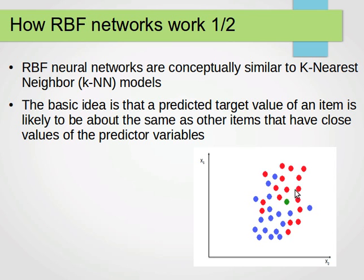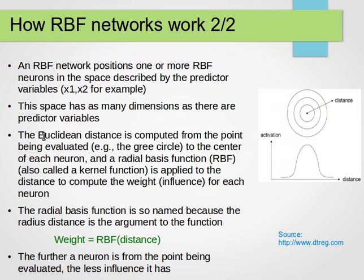For example, with two-dimensional data and two classes — red and blue — and a new green point we want to classify, we can choose the five nearest neighbors around it and use majority vote to classify that new point. The basic idea is that the predicted target value of an item is likely to be similar to other items that have close values of the predictive variables or features.